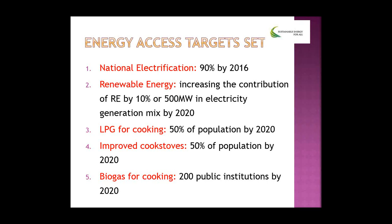We also aim to have 50% of the population using improved cook stoves by 2020. Recognizing that some may not be able to afford LPG due to high initial equipment investment, the strategy is to encourage those users toward improved cook stoves rather than conventional traditional ones. For biogas, the target is to have 200 public institutions using biogas for cooking by the target completion year. In terms of improvements, we are currently at approximately 80% electrification.